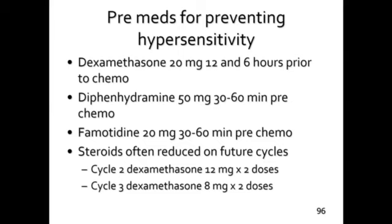Premedications are somewhat evolving as people want to decrease steroid exposure. Dexamethasone should be taken prior to chemo at 12 and 6 hours before. If patients forgot or didn't receive it, you can give 20 mg IV prior to the dose. Steroids are often tapered or reduced for future cycles to decrease cumulative dexamethasone exposure.